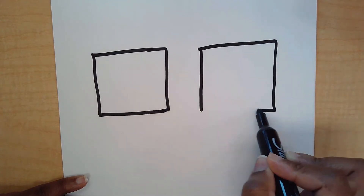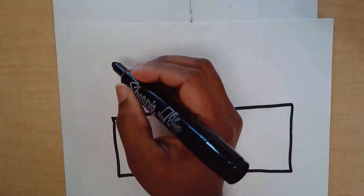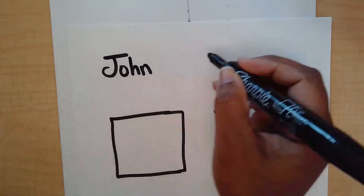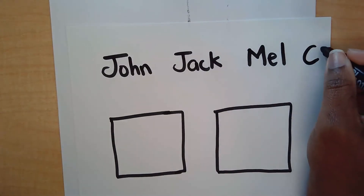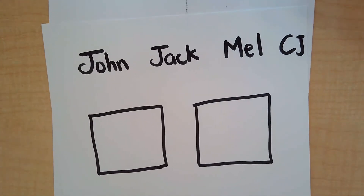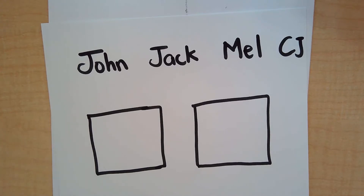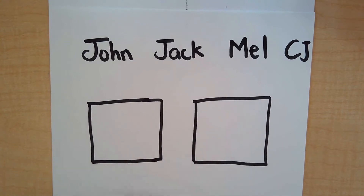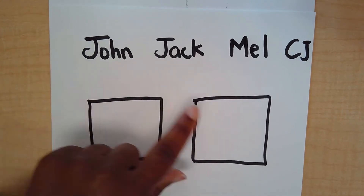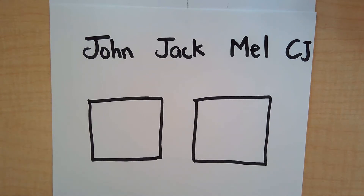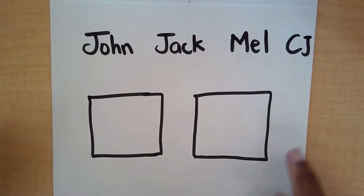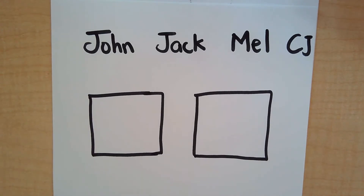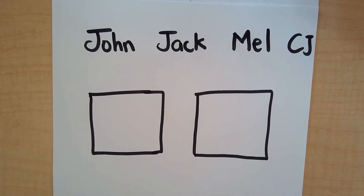There are several ways we can try to solve this. So let's call our friends John, Jack, Mel, and CJ. We have our four friends and they need to share these two papers. Now if I gave John one whole paper and Jack the other, would that be equal? Absolutely not — it would not be shared equally, because Mel and CJ would not have gotten a piece. So we need to make sure that as we're sharing, each friend gets a piece, and the piece they get must also be equal.